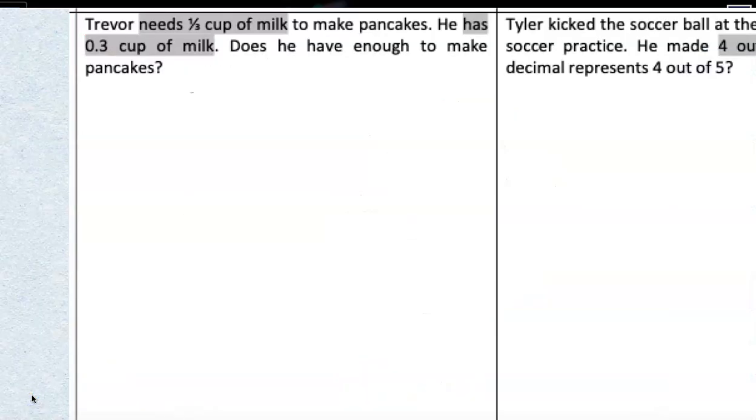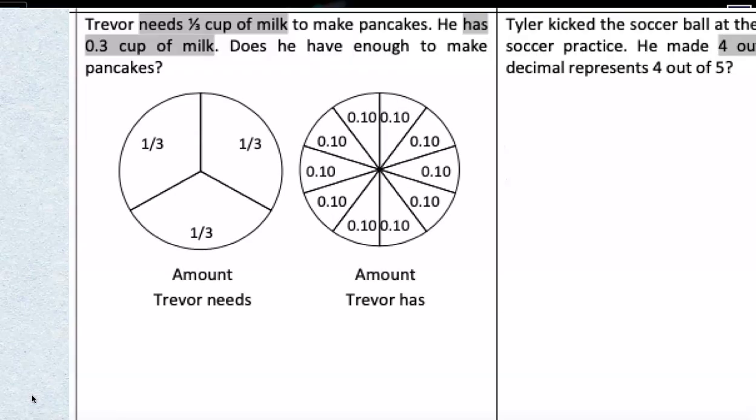Let's try the next one. Trevor needs one-third a cup of milk to make pancakes. He has three-tenths, or 0.3, cups of milk. Now, does he have enough to make pancakes? Let's try and visualize this. Well, Trevor has one-third of a cup of milk.